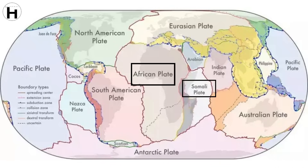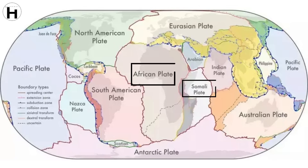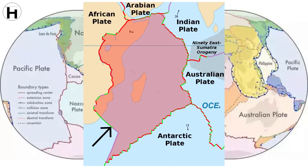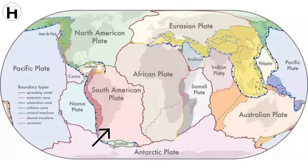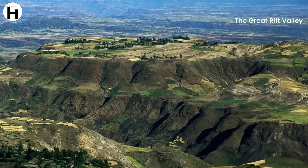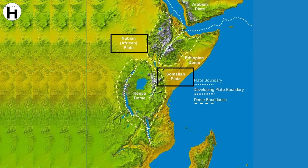The continent of Africa consists of crust from both the African and the Somali plates. Africa with the eastern Atlantic floor plate is one of the major seven tectonic plates, also known as the Nubian plate. The Somali plate is in the eastern part of Africa, positioned along the East African rift zone. The rifting, which began about 25 million years ago, produced the East African Rift Valley lying between the Nubian and Somalian tectonic plates.